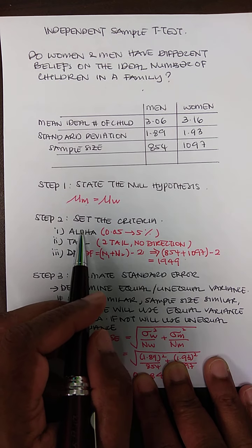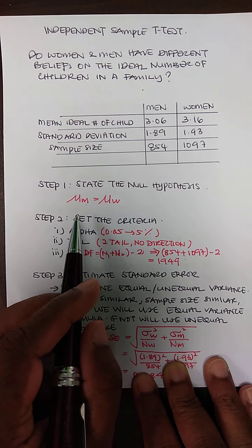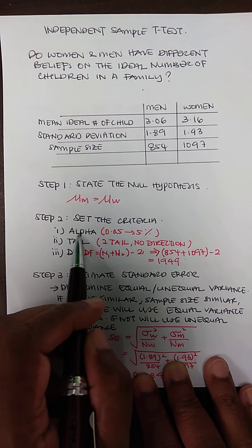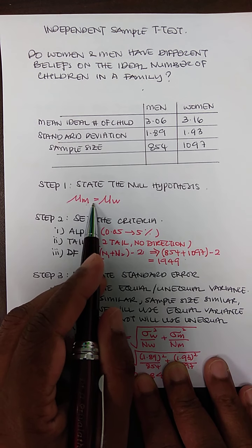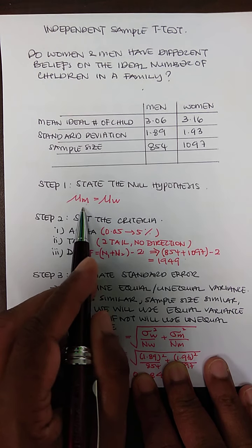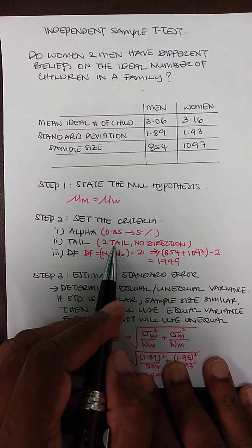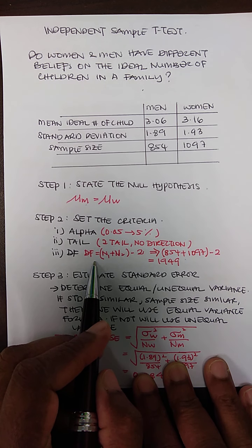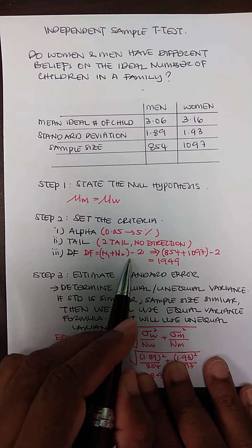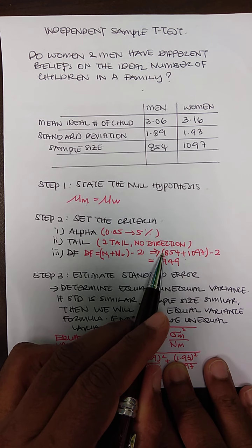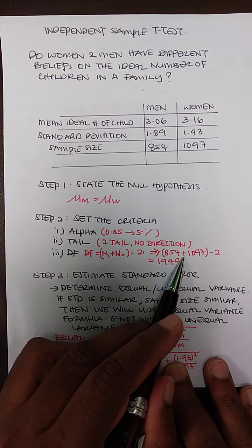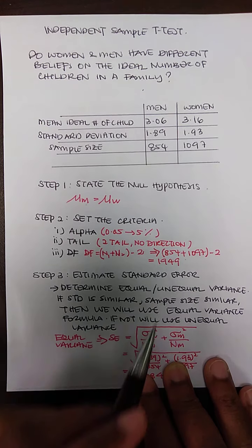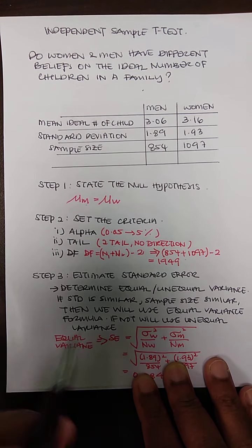Second, you set the criteria. We need three pieces of information: the level of significance, which is 0.05; the tail — since my hypothesis is non-directional (I say they are equivalent), I have a two-tailed test; and the degrees of freedom, which is n1 + n2 − 2 = 854 + 1097 − 2 = 1949.